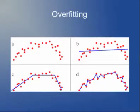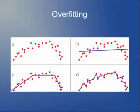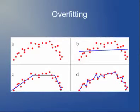An overfit model would be one where you're basically just interpolating the points. When you interpolate, you get an error of zero on your fitting data, but if you generate new data from the same distribution and apply this model, the model is likely to perform poorly because the new data points won't follow the exact same pattern. That's the issue with multicollinearity: if you have a high number of predictors, it's easy to develop a model that works well on the fitting data but poorly on future data sets.